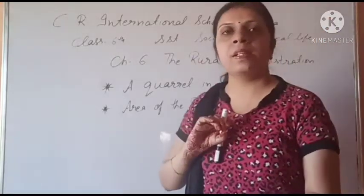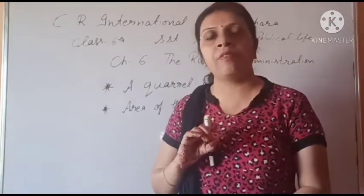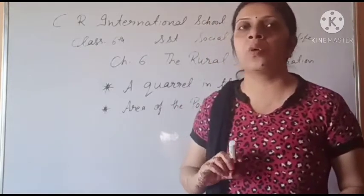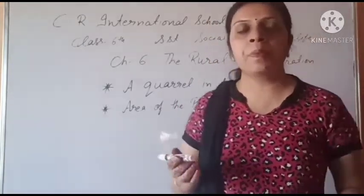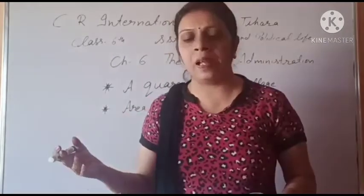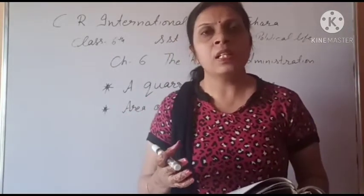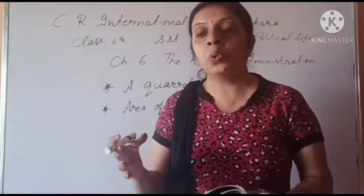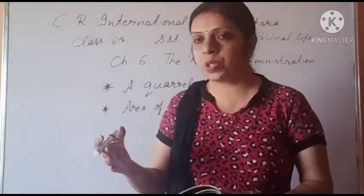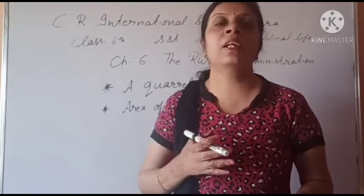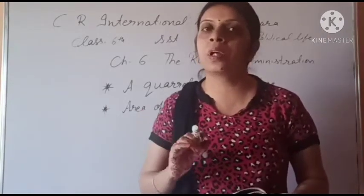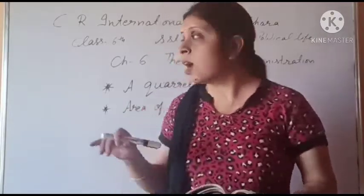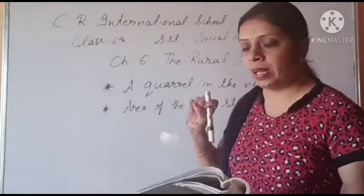आज हम chapter number 6 लेने वाले हैं Social and Political Life का, जिस chapter का नाम है Rural Administration यानि की गाउं का प्रशासन। पानी की व्यवस्था देखना, electricity की व्यवस्था देखना, ये सब काम कोई आसान नहीं है। Zameen ka rakh rakhav rakhna, do logon ki zameen ke baare mein kis ne voh zameen kharidi, kis ke khet ki kitna naap hai — yeh sab maintain karna koi asan kaam nahi hai. Yeh sab kaam aaj hum is chapter mein pardhne wale hain.